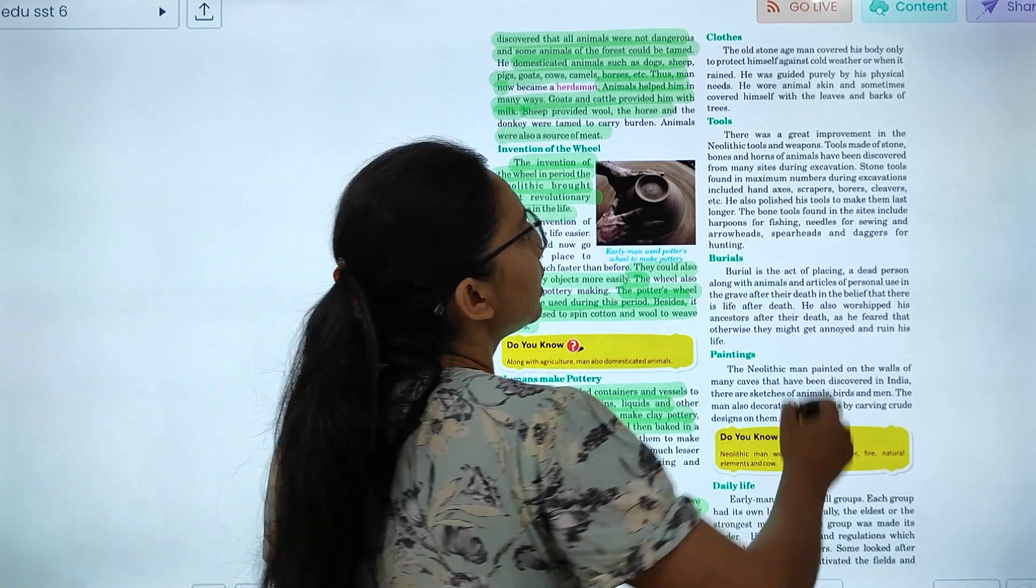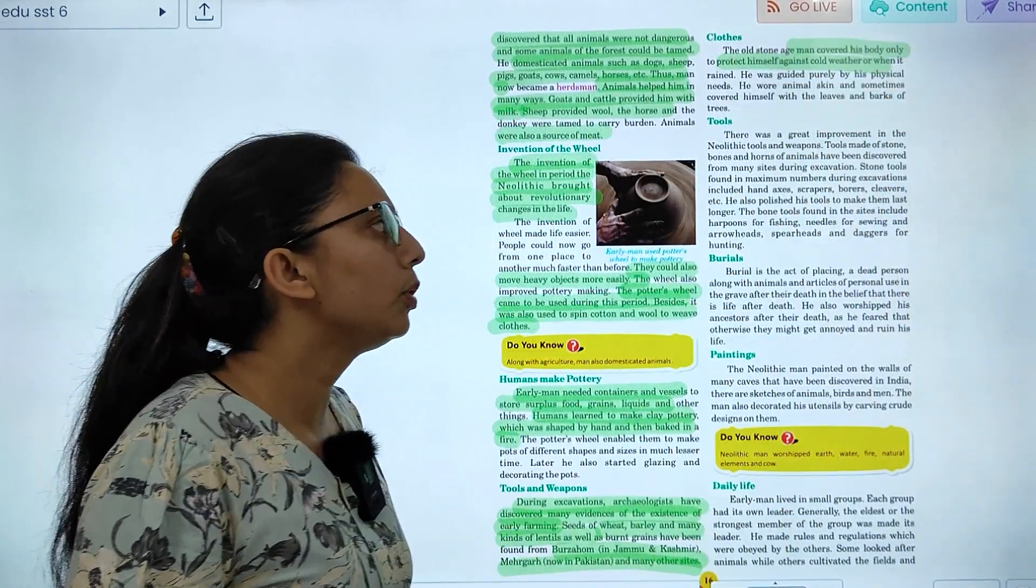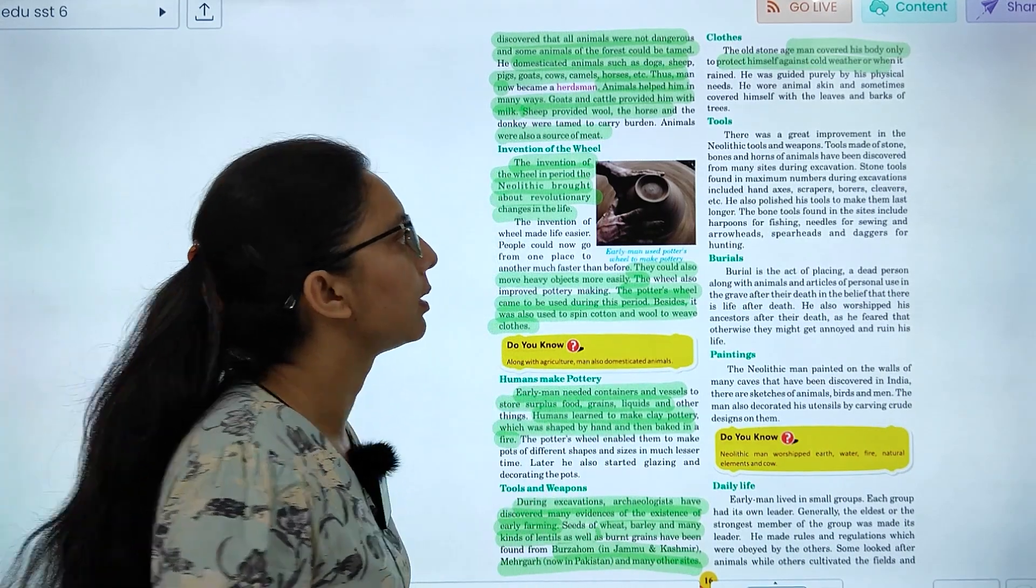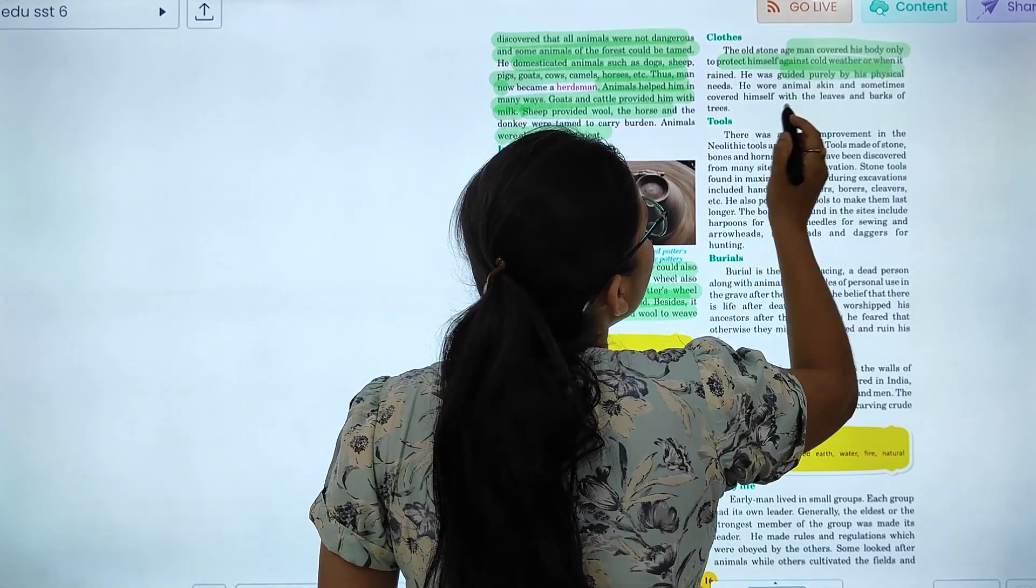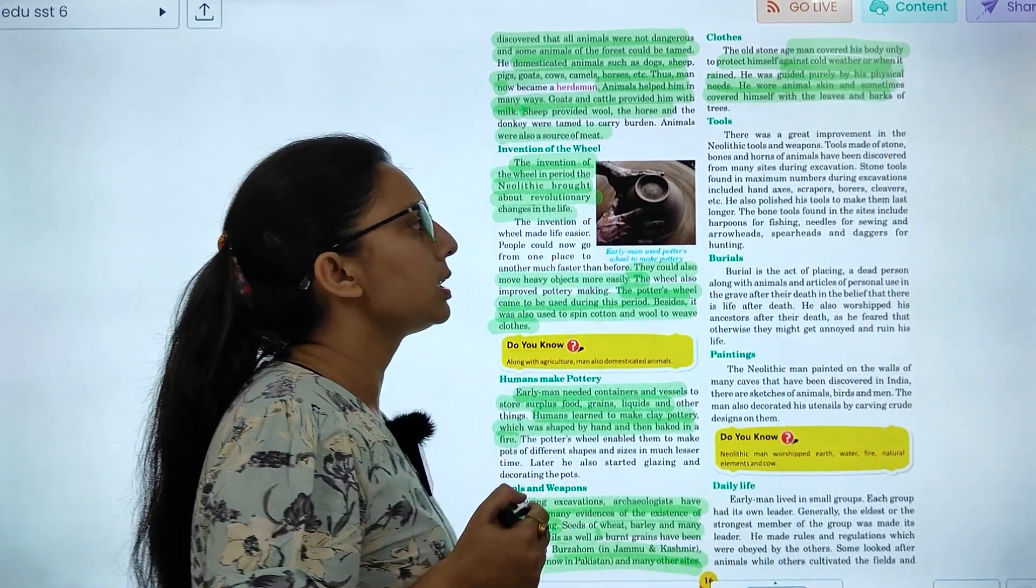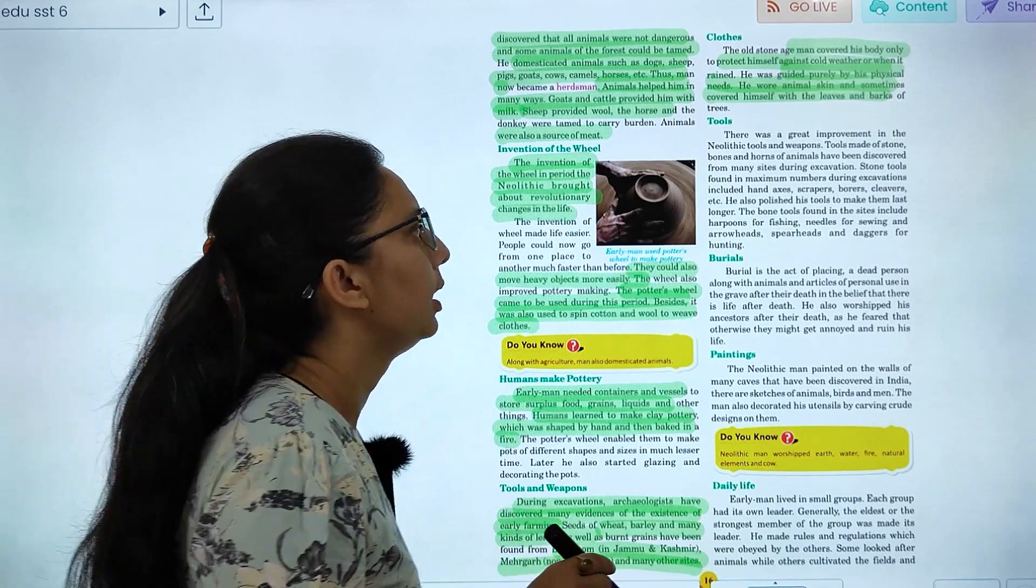When you see your body in cold weather, you can use the skin of the animal, or the bark of trees. They used purely their physical needs. Given the animal skin and the bark type, you can cover your body from the leaves or the bark of trees.